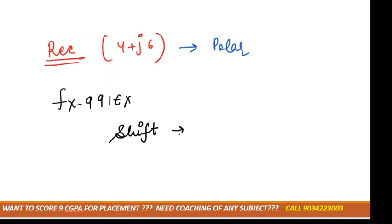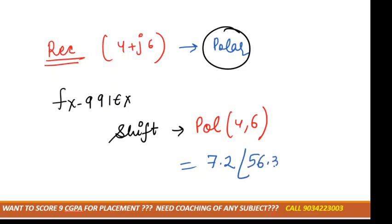Shift. Then you want to convert it into polar form, so press Pol, that is 4 comma 6. So if you will do it, then you will get the answer. Do it in your calculator. You will get 7.2 and angle is 56.3. This is the conversion of rectangular to polar.